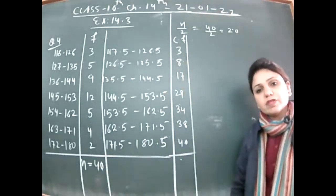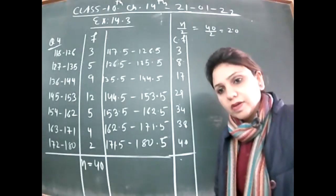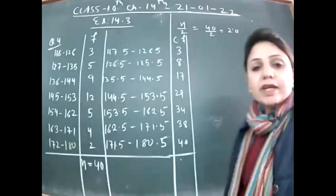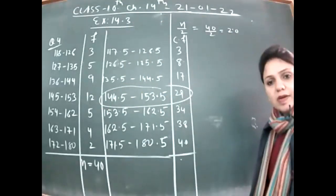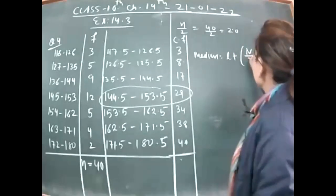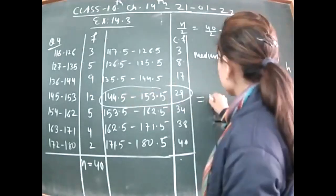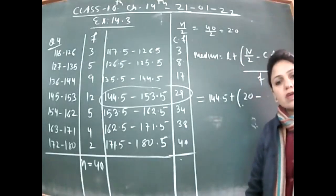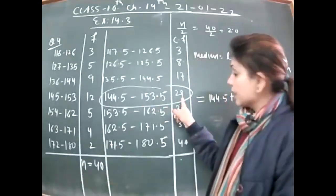Since n/2 = 20, find the cumulative frequency just greater than 20. Looking at the table, that value is 29. So the median class is the interval corresponding to cumulative frequency 29, which is 144.5 to 153.5. Apply the formula: Median = L + (n/2 − CF) / F × H. L is the lower limit of the median class, which is 144.5, and n/2 is 20.